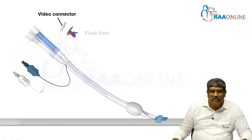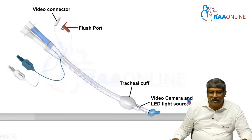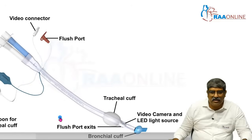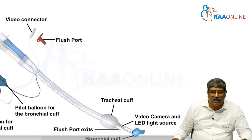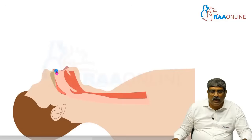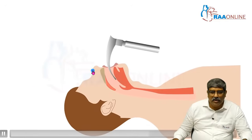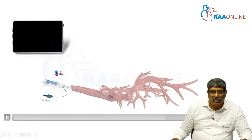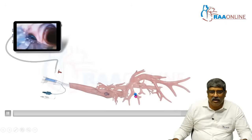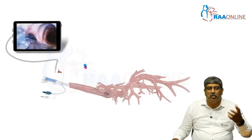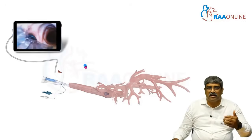The device has a video connector, a flush port, a tracheal cuff, and you can see the video camera with the LED source, the bronchial cuff, a flush port exit, pilot balloons for the tracheal and bronchial cuff, and the bronchial lumen and tracheal lumen. After laryngoscopy, the tube is inserted and the video connector port is connected to the monitor. Here you can see the left mainstem bronchus with the bronchial cuff and the right mainstem bronchus, so you can continuously view the tube position inside the bronchus and trachea.